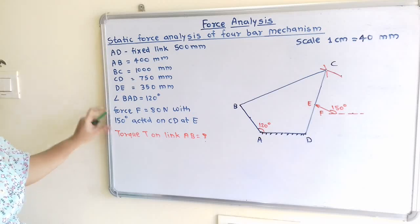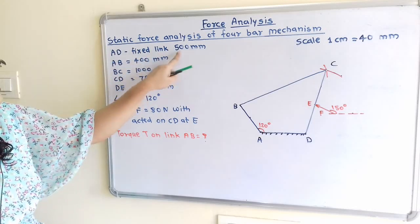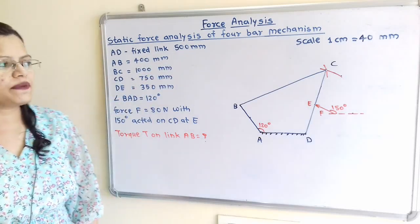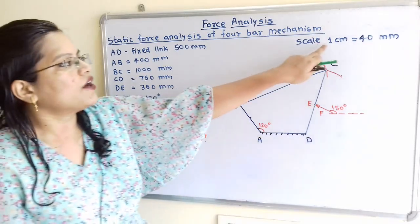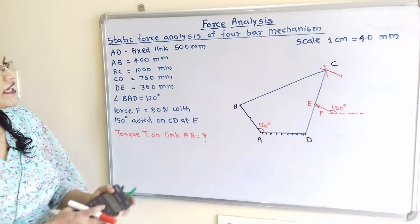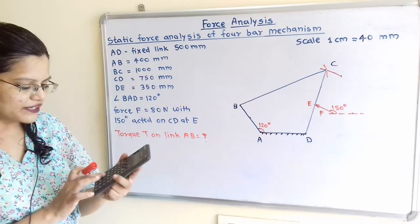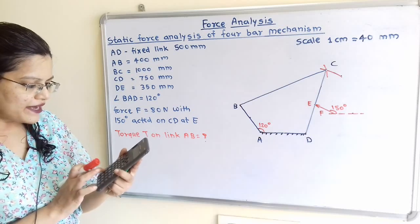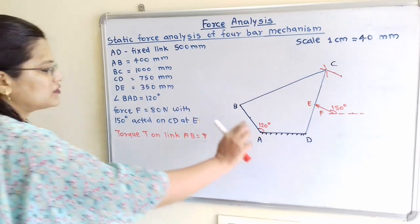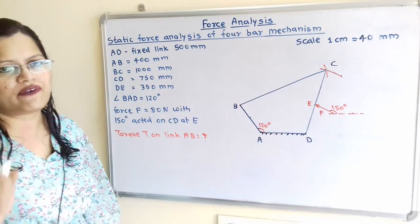If we observe the data, link AD is the fixed link and its length is 500 mm. We will consider a suitable scale: 1 cm equals 40 mm. So 500 divided by 40 is 12.5 cm. We will first draw the fixed link AD which is equal to 12.5 cm.